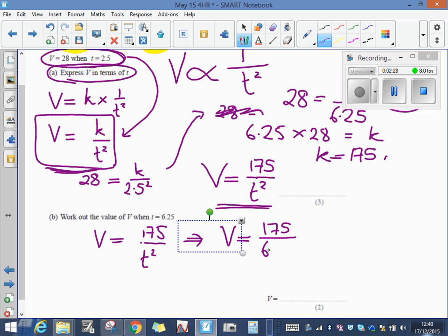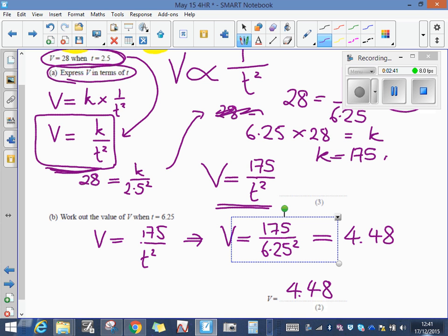V then is going to equal 175 divided by 6.25 squared. If I work that out on my calculator it comes out as 4.48, so V is 4.48.